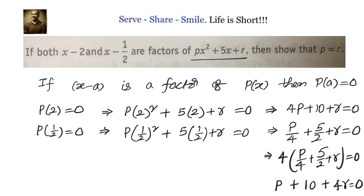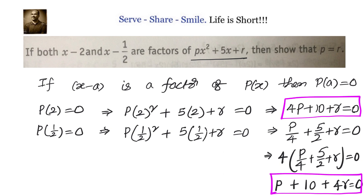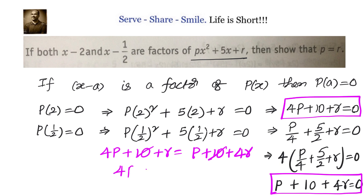Now we have two equations: the first is 4p plus 10 plus r equals 0, and the second is p plus 10 plus 4r equals 0. Since both equal 0, we can equate them: 4p plus 10 plus r equals p plus 10 plus 4r. The 10s cancel, giving 4p minus p equals 4r minus r, so 3p equals 3r, therefore p equals r.